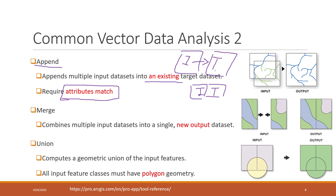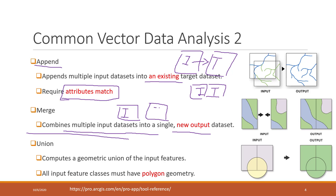Merge is pretty simple — merge just combines two or more inputs into a single new dataset. So if you have input one and input two, it doesn't matter if they are polygons, lines, or points; you merge them together and you get a new output that contains both inputs. Merge does not require attribute match and it generates a new output.